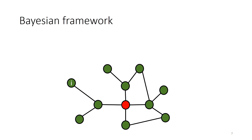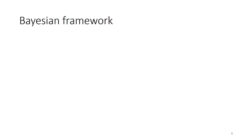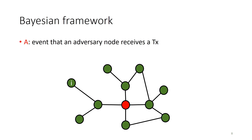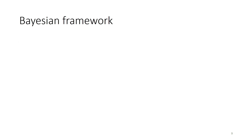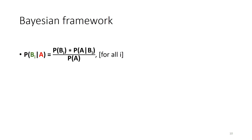In the Bayesian framework, we define some events. Given any peer-to-peer graph, the first event PBI is the event that a benign node I generates a transaction. Another event A means that some adversary node — the red node — receives a transaction. What we want to know is PBI given A: given that an adversary node receives a transaction, what is the probability that benign node I generated it? If we can do this for all honest nodes, we can determine the anonymity set for a particular transaction, calculated using Bayes' theorem.